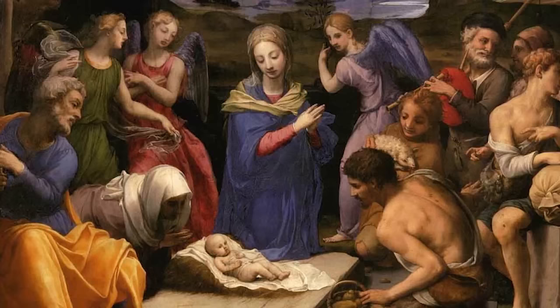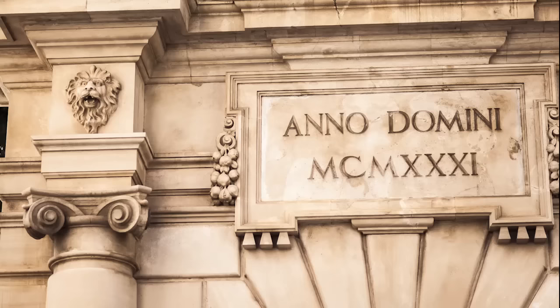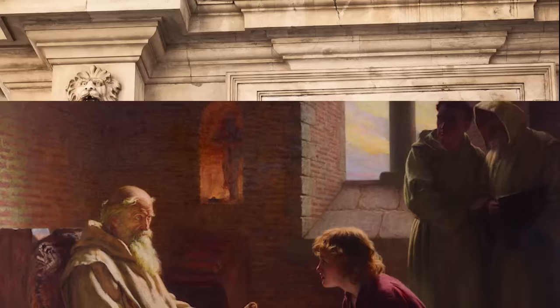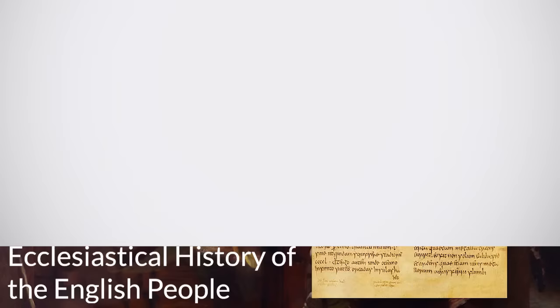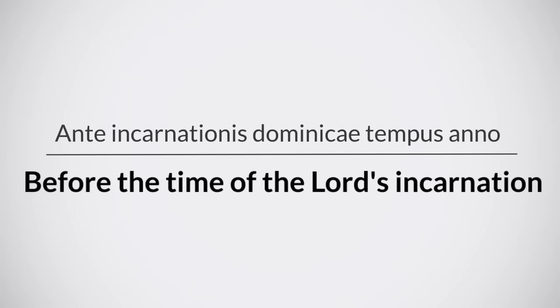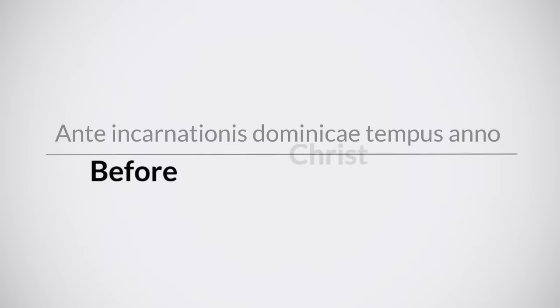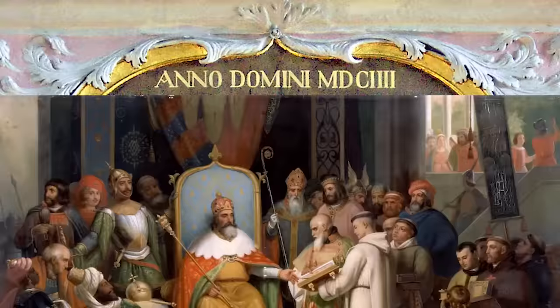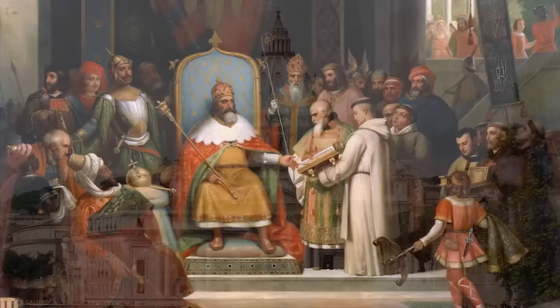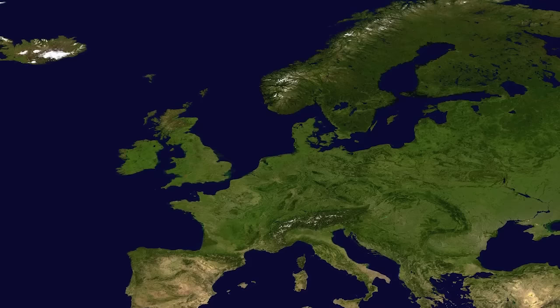Regardless, the year Dionysius thought to be the birth of Jesus is the one that stuck. Anno Domini was popularised by an Anglo-Saxon monk known as Venerable Bede in his work 'The Ecclesiastical History of the English People', completed in the year 731. In this same work, he also used the phrase 'before the time of the Lord's Incarnation' to refer to the time before Anno Domini. This would eventually develop into the 'before Christ' that we use today, but was not adopted until several hundred years later. The Anno Domini system was endorsed by the Holy Roman Emperor Charlemagne, and would later be officially adopted by the Roman Catholic Church. By the 15th century, the system was used all across Europe and beyond.